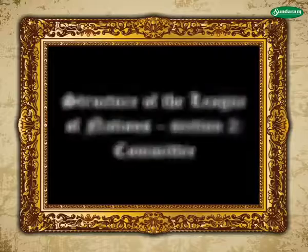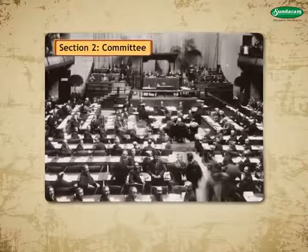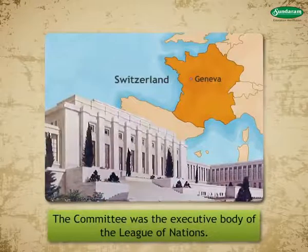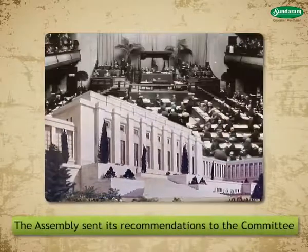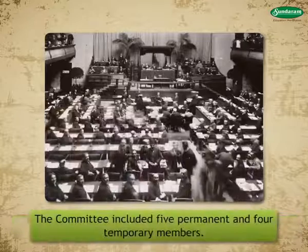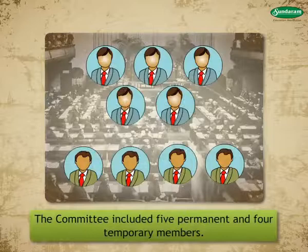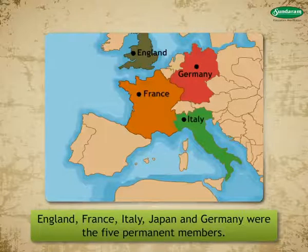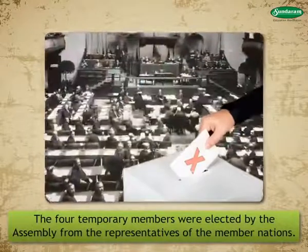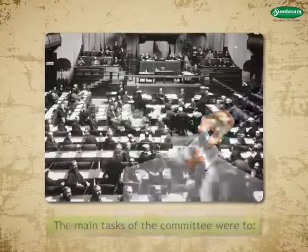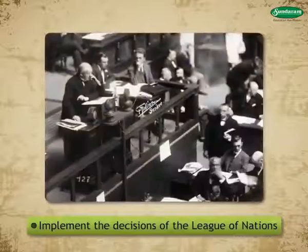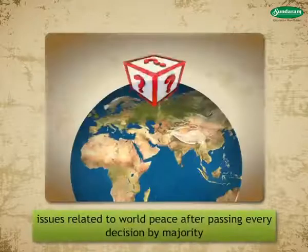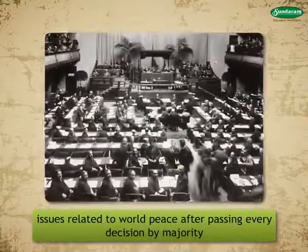The second section of the League was the Committee. The Committee was the executive body of the League of Nations. The Assembly sent its recommendations to the Committee. The Committee included five permanent and four temporary members. England, France, Italy, Japan, and Germany were the five permanent members. The four temporary members were elected by the Assembly from the representatives of the member nations. The main tasks of the Committee were to implement the decisions of the League of Nations, to solve the crisis among the nations, and to control the Secretariat Office and handle issues related to world peace after passing every decision by majority.